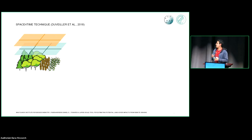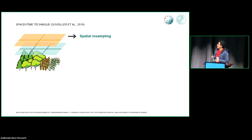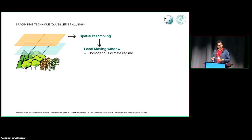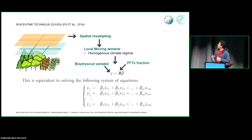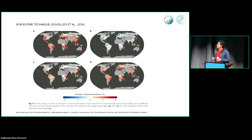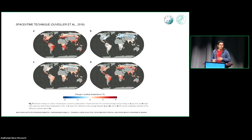Duvelier in 2018 developed the space-for-time technique, where first you do a spatial resampling to have all the products in a common spatial space. Then, using a local moving window that assumes the climate regime is homogeneous within the window — so there are no other confounding factors affecting the signal — you estimate the contribution of each PFT into the biophysical variable using a linear regression. This example from the same authors shows the delta, the change of land surface temperature for different regions, where we see an increase of land surface temperature in tropical regions mainly produced by deforestation.